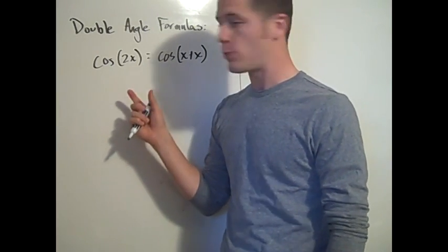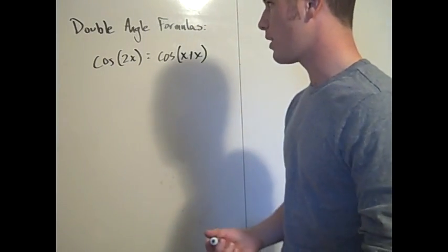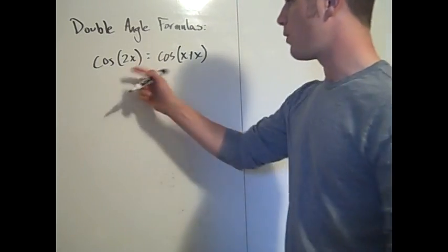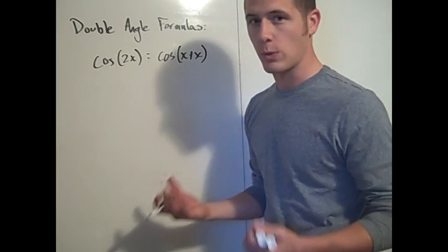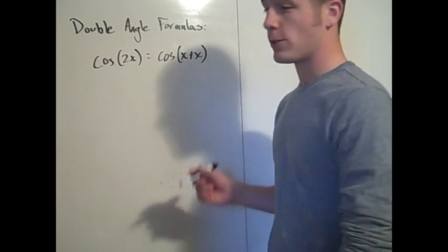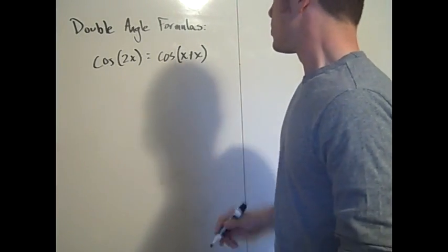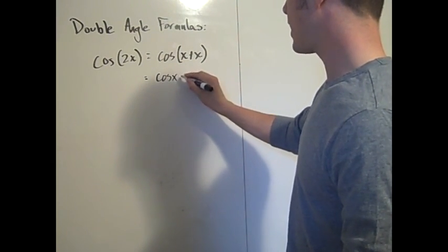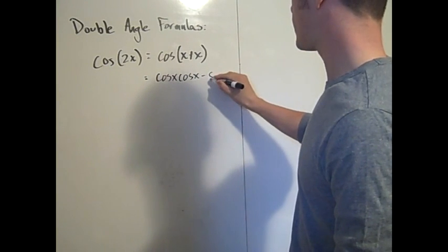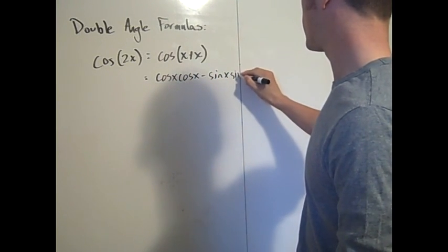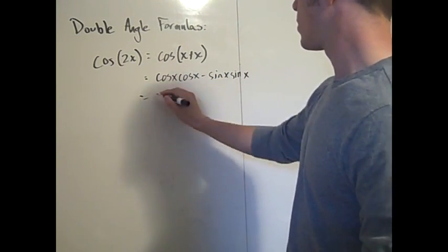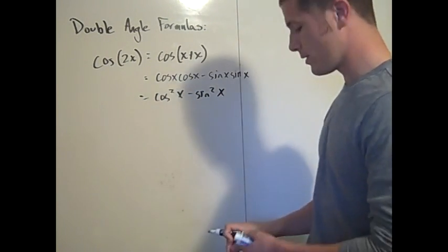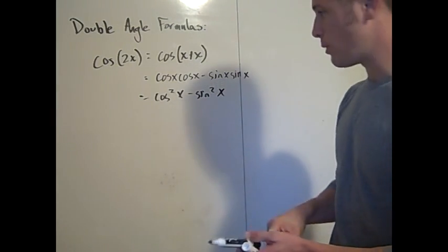You're going to want to know all three forms, and the hard part is knowing which one to use when. By the sum formula for cosine, cosine of x plus x equals cosine x times cosine x minus sine x times sine x, which is cosine squared x minus sine squared x. That's the first form you should know.